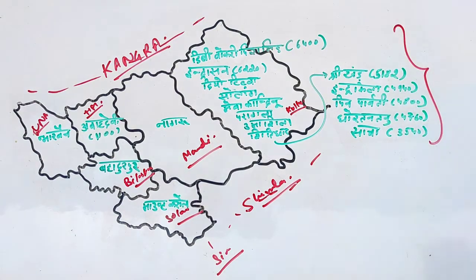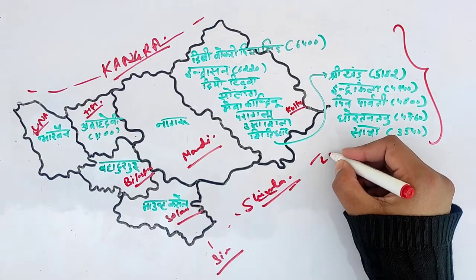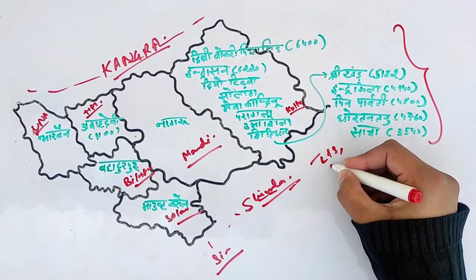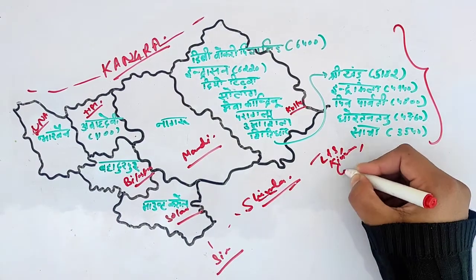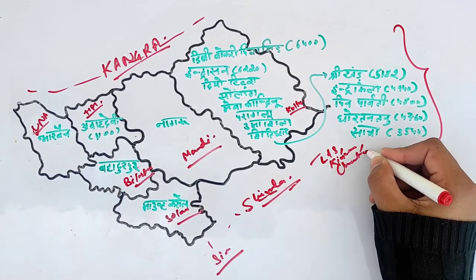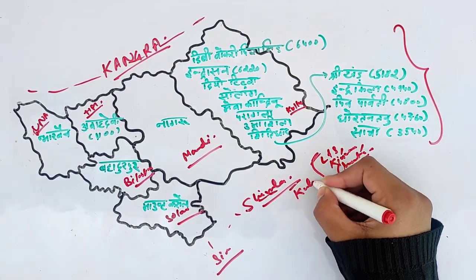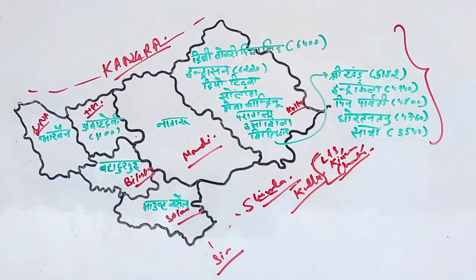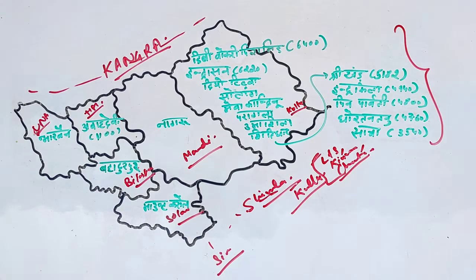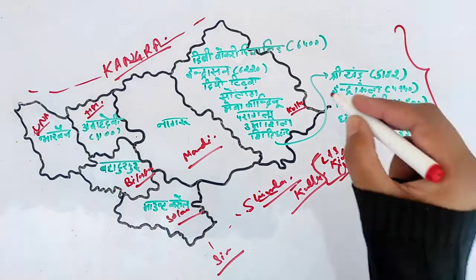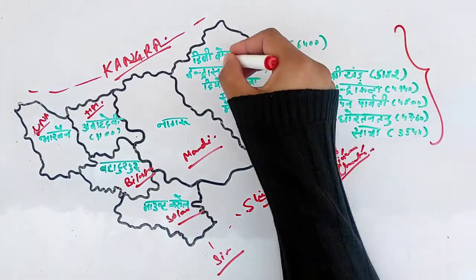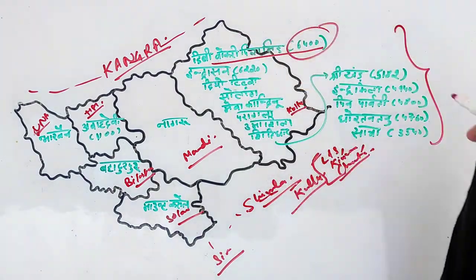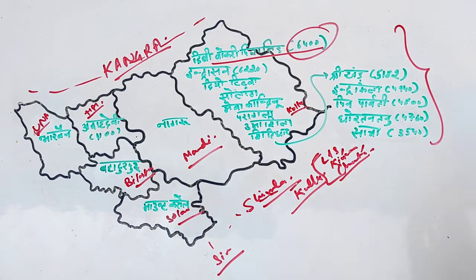In Kullu, there are many smaller districts. There are 4 districts: Lahaul, Spiti, Kinnaur, Chamba. These are all important, but Kullu is also very important because there are many mountains and peaks. The smallest peak in Kullu is Devi Tibba — the Pyramid peak — at a height of 6400 meters.